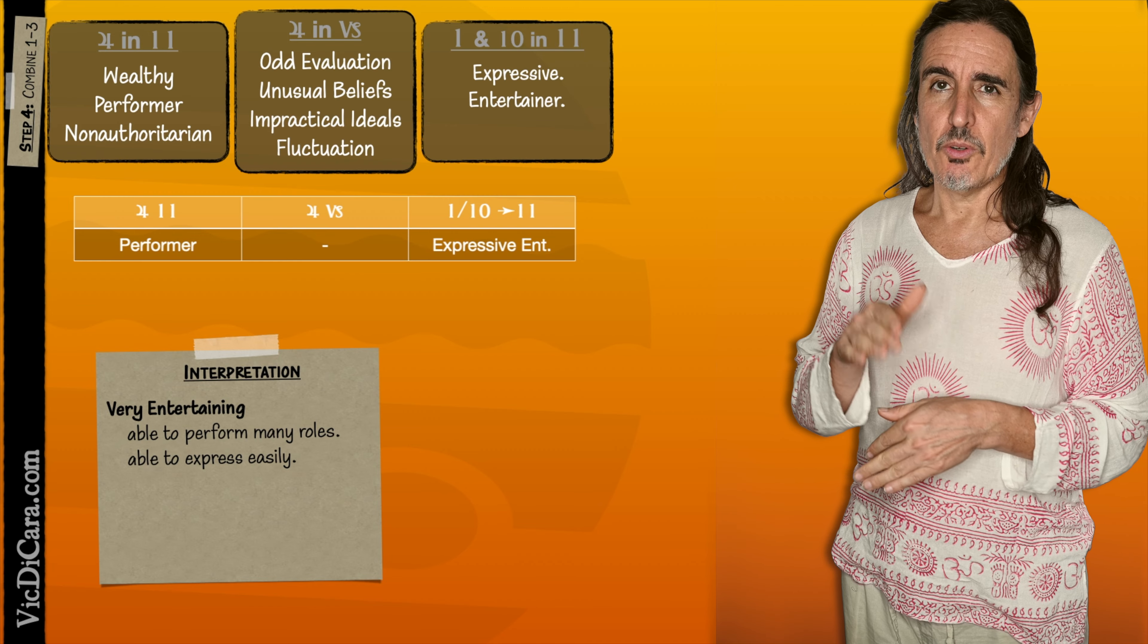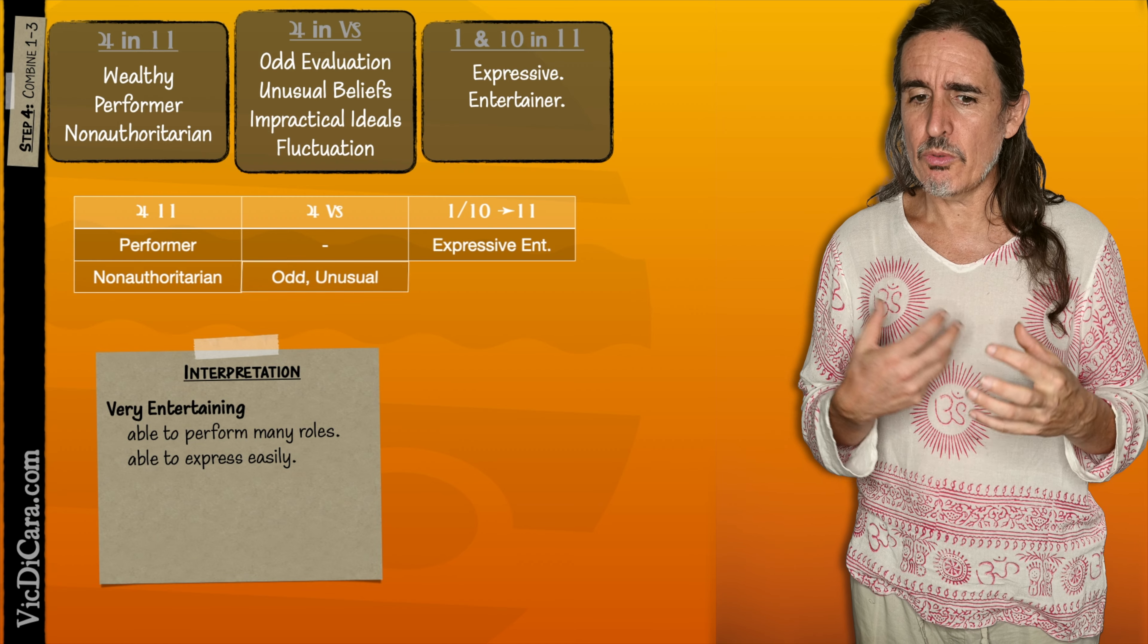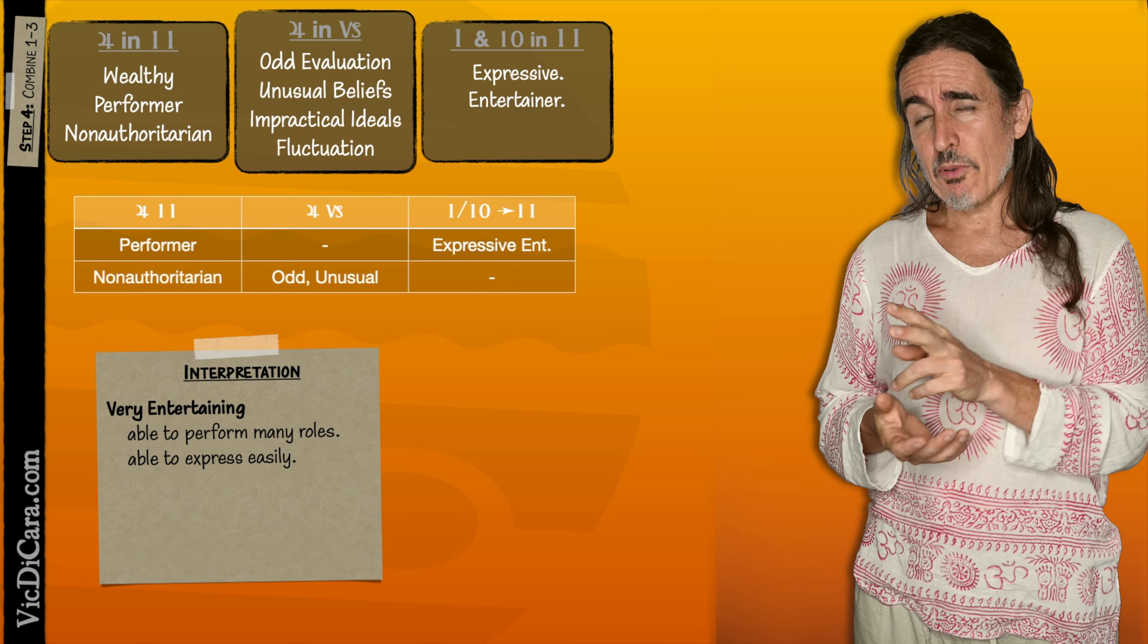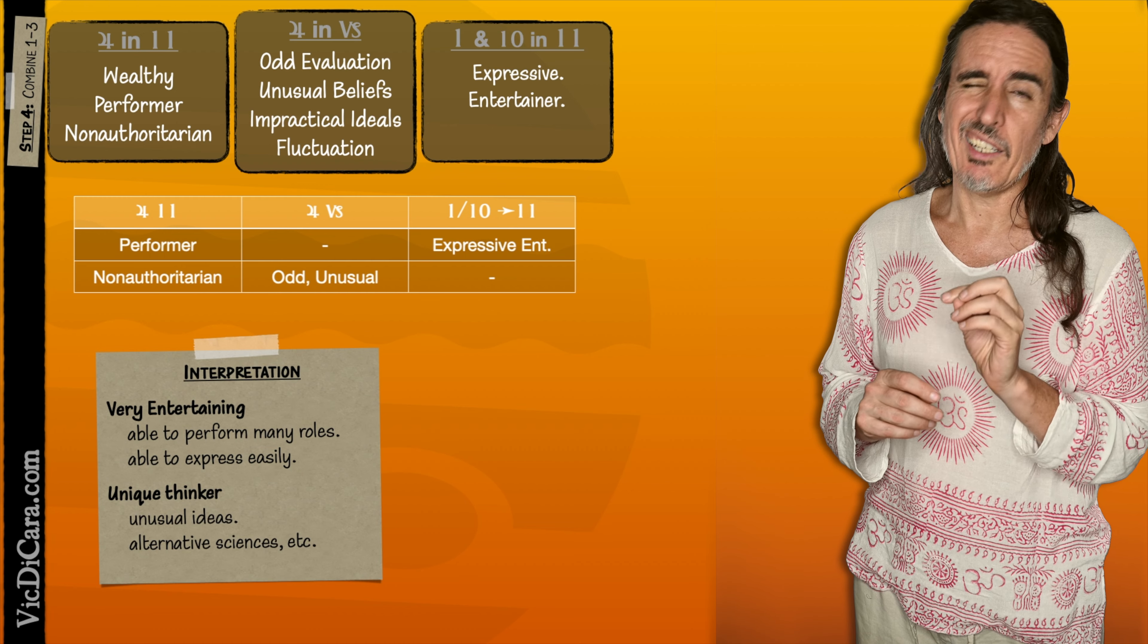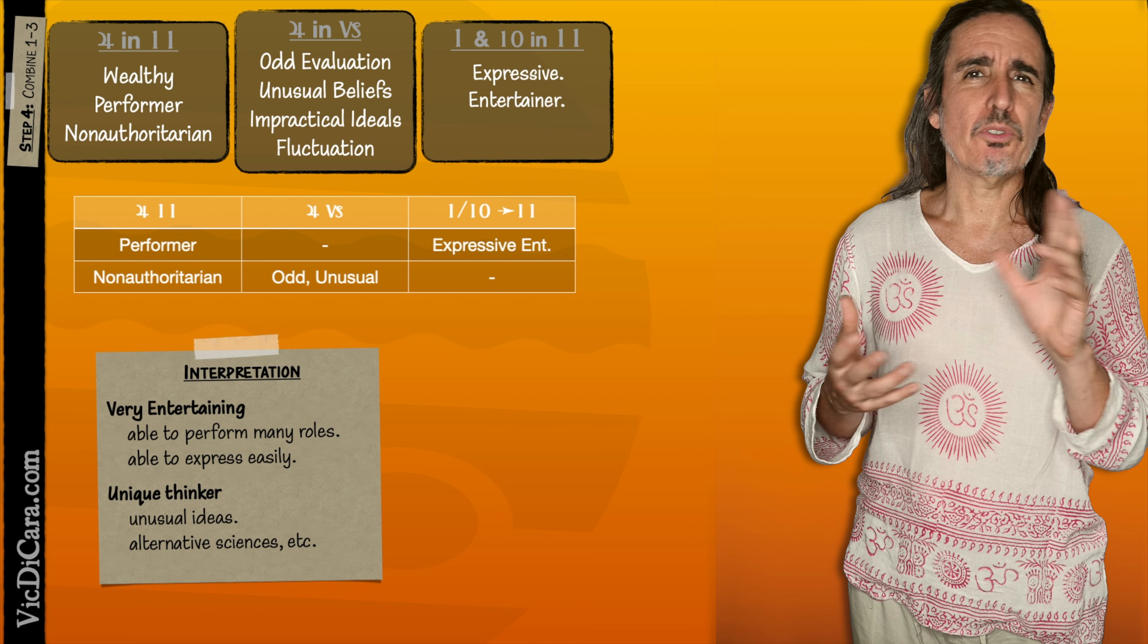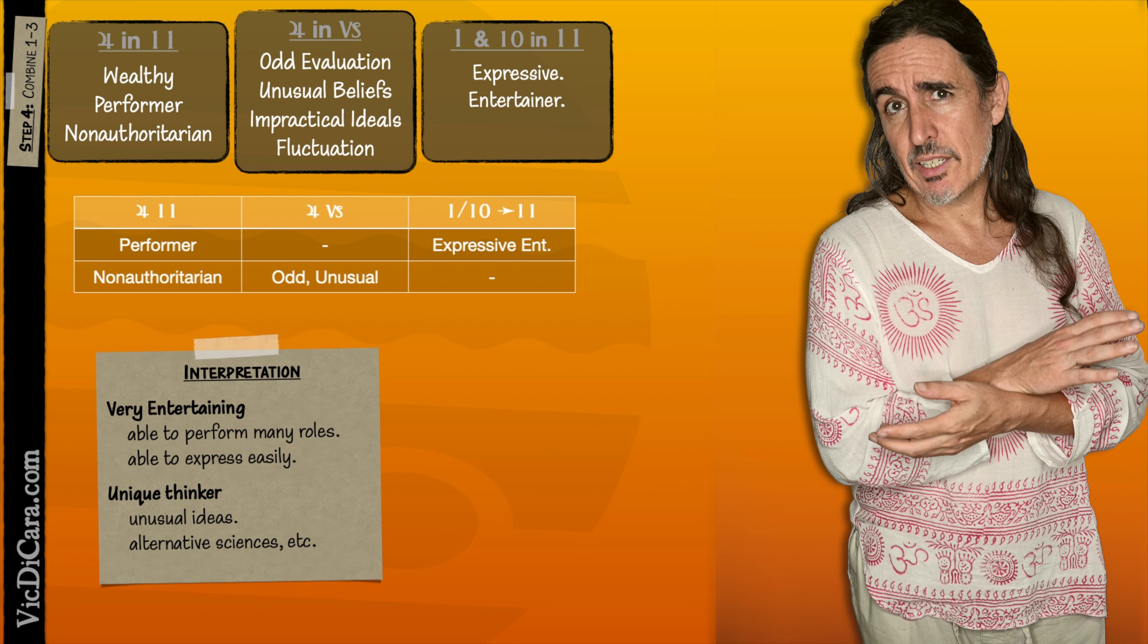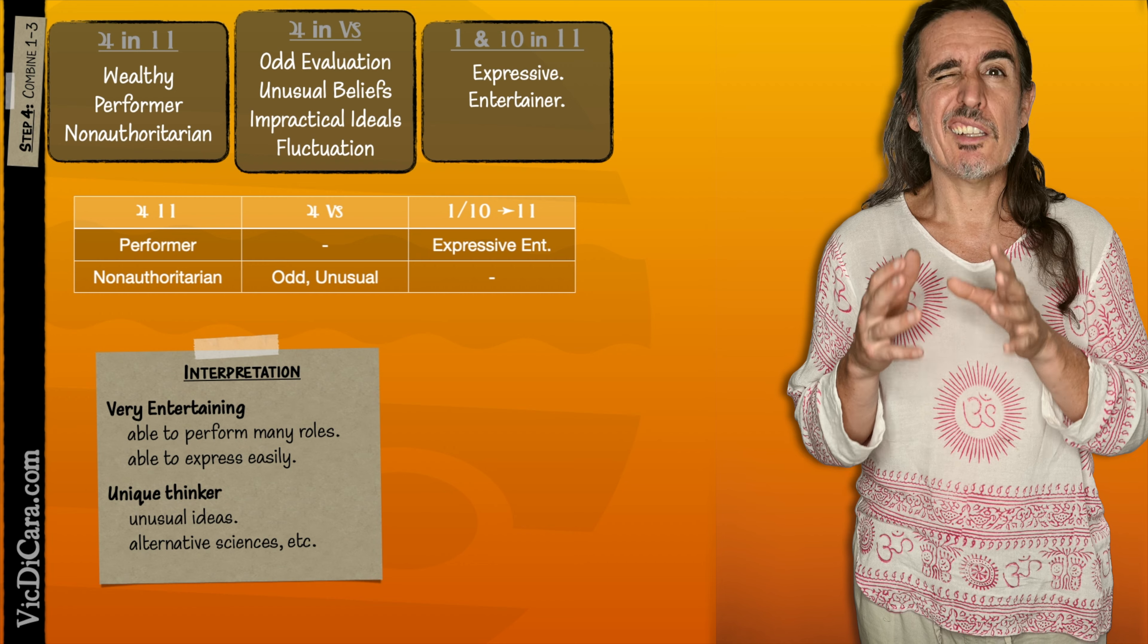Another thing going on is that Jupiter in the 11th house was non-authoritarian. And Jupiter in Capricorn has this odd, unusual way of evaluating and believing in things. It believes in unusual things. So you put those two together, and Jupiter in Capricorn in the 11th house symbolizes a unique thinker, somebody with unusual ideas, like for example, alternative sciences, alternative spiritualities, and stuff like that. The oddness or the unusualness of Jupiter in Capricorn is going with the non-authoritarianism of Jupiter in the 11th, so the person doesn't feel constrained by authority structures in the intellectual sphere.